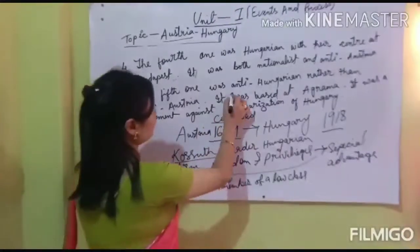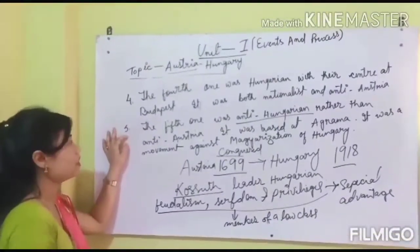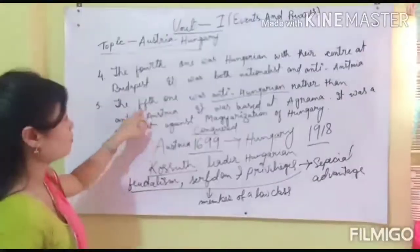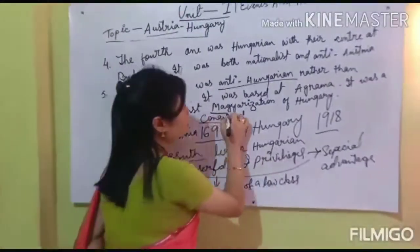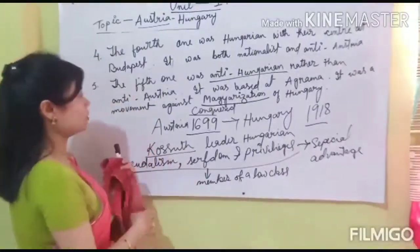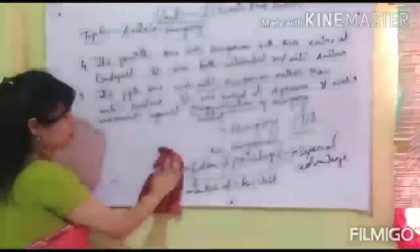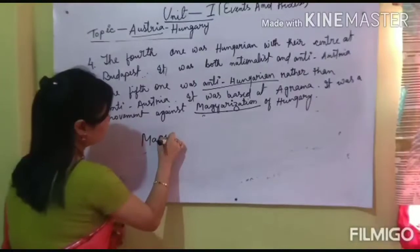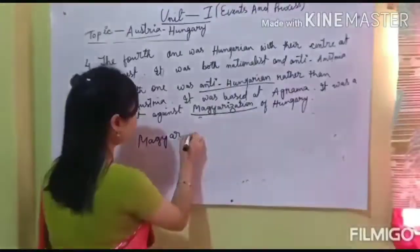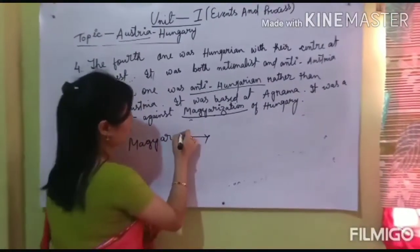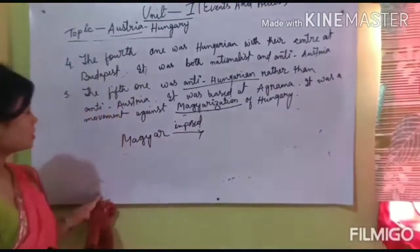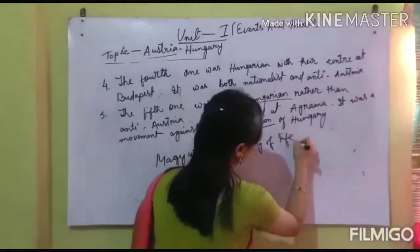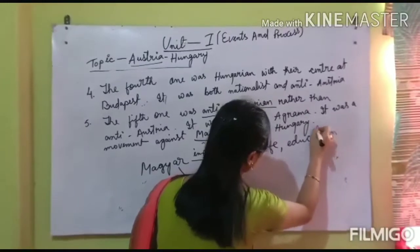This fifth revolution is related to the Magyarization of Hungary. The Magyarization of Hungary refers to the main nationality of Hungary imposing itself on smaller nations. The way of life and the education system were subject to change through Magyarization, and these changes were imposed on smaller nationalities.